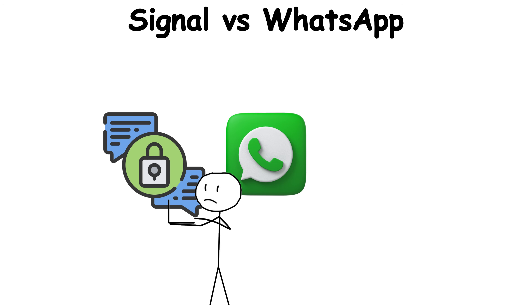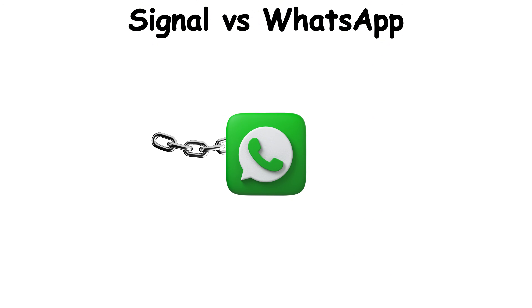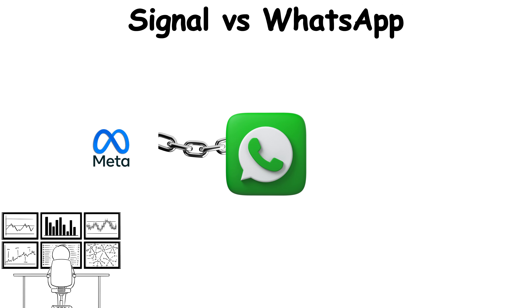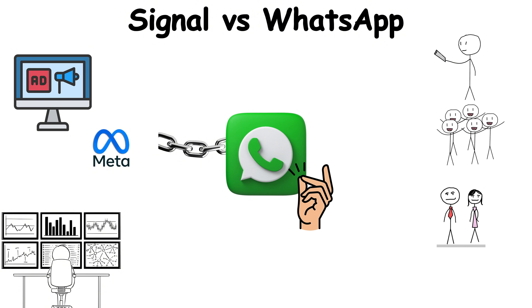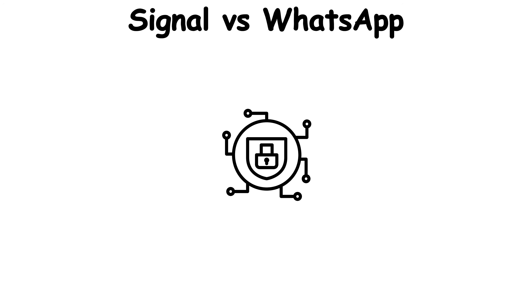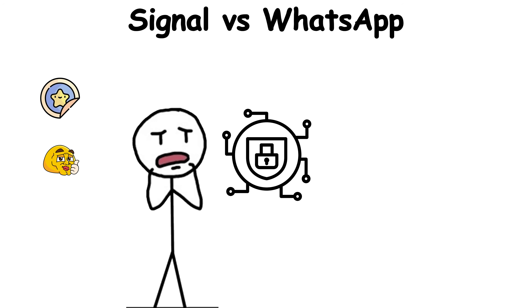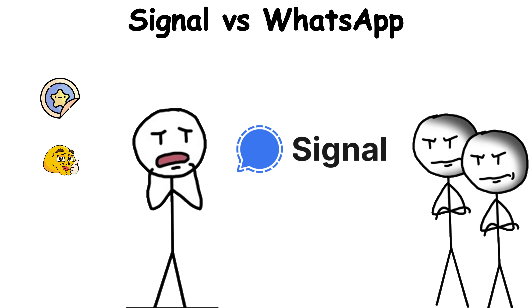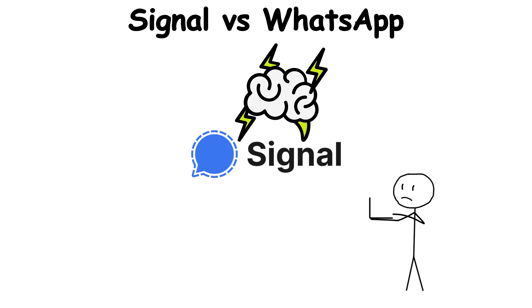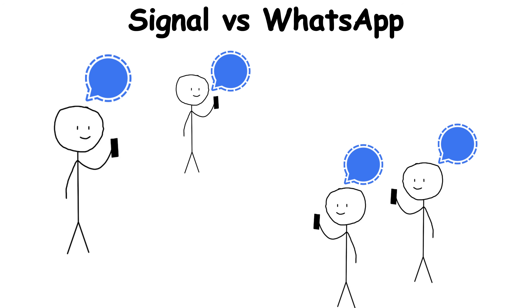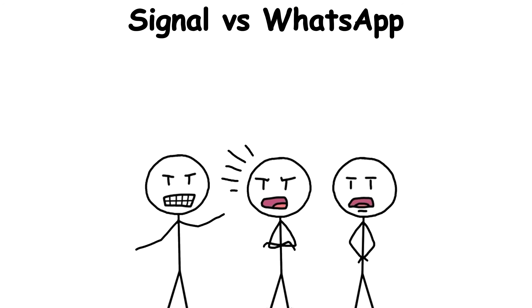WhatsApp may have end-to-end encryption, but it's still tied to Meta, where data fuels a massive ad empire. Your family chats, school groups, and work banter all live there because it's easy. But when safety matters more than stickers or group memes, people switch to Signal. It runs entirely on donations, yet in critical moments — like protests or whistleblowing — Signal becomes the app that keeps conversations alive when trust in anything else feels dangerous.